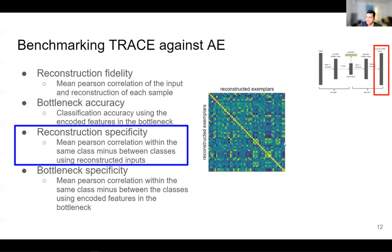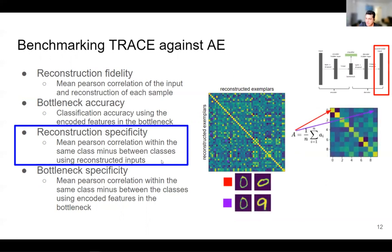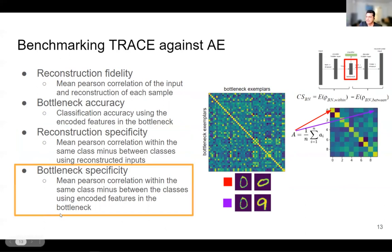We also look at reconstruction specificity, which examines the reconstructed exemplars and computes the mean Pearson correlation within the same class minus between classes. For example, we look at the mean correlation of different instances of zero — that is the within-class correlation — and the correlation between zero and all other classes, which is the between-class correlation. Reconstruction specificity is the within-class mean minus the between-class mean. Bottleneck specificity is calculated the same way but using the bottleneck features instead of the reconstructed ones.